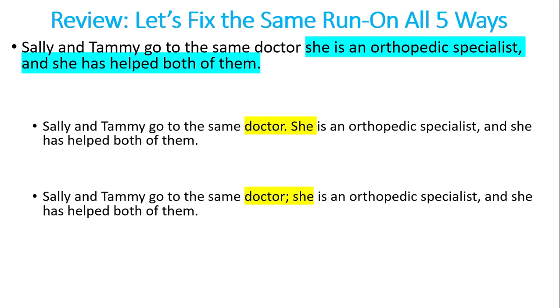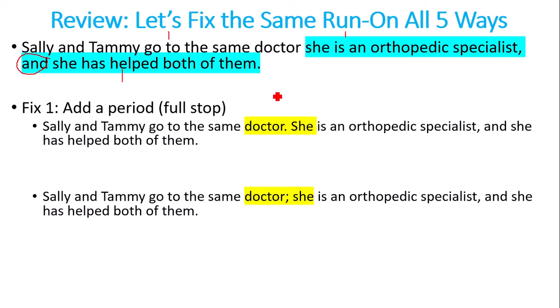So let's fix the same run-on five ways. 'Sally and Tammy go to the same doctor. She is an orthopedic specialist and she has helped both of them.' I put the second independent clause in blue. First, we can do a full stop: 'Sally and Tammy go to the same doctor, period. She is an orthopedic specialist and she has helped both of them.' Semi-colon: 'Sally and Tammy go to the same doctor; she is an orthopedic specialist and she has helped both of them.'